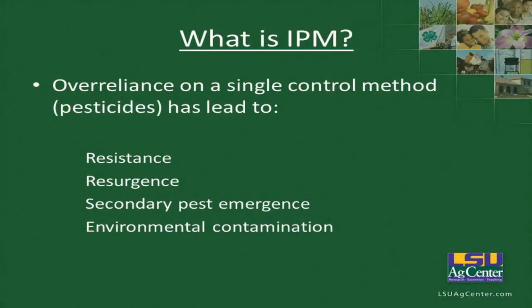So why do we use integrated pest management? Over-reliance on a single control method — pesticides — has led to four key points: resistance, resurgence, secondary pest emergence, and environmental contamination.